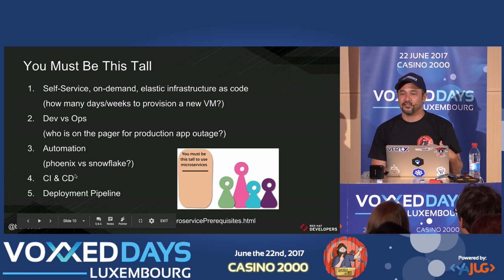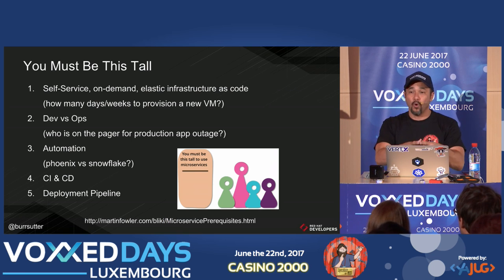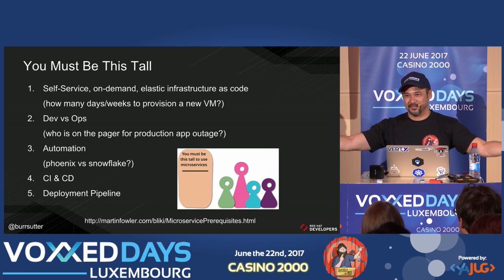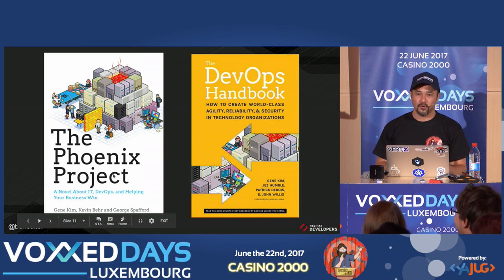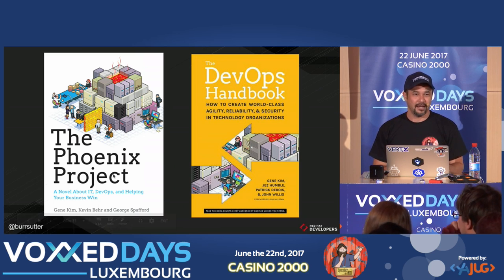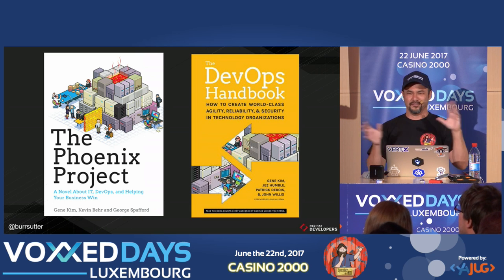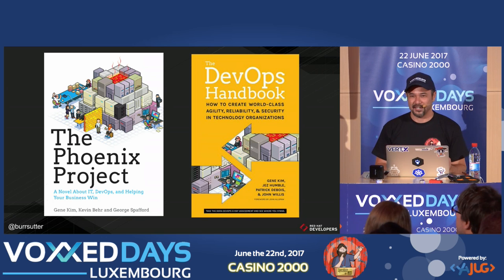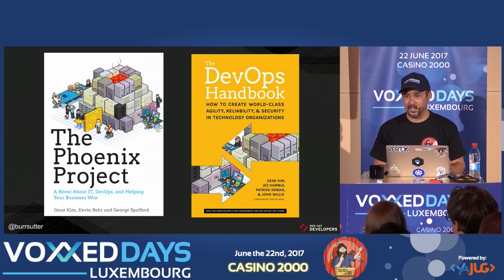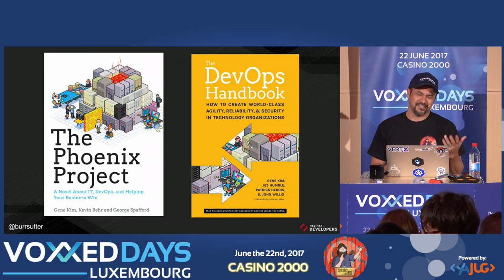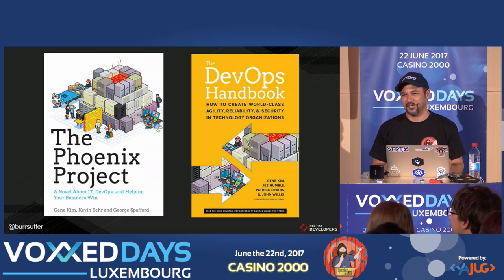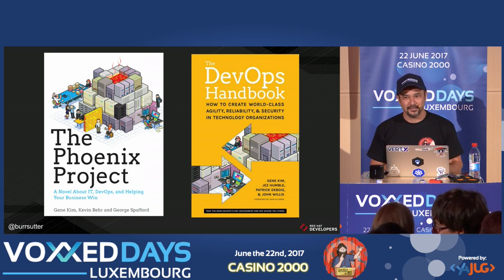These are the kinds of things you should think about long before you say, 'I'm going to take my one application and break it into 55 applications because I want microservices.' If you can't deploy one thing easily on one server, how are you going to do 55 or 2,000? I'd recommend these books very highly. It says ops on there — you're thinking you're a developer and don't like Linux admins — that's the wrong attitude. You also need to learn to love your DBA. Take them to lunch.